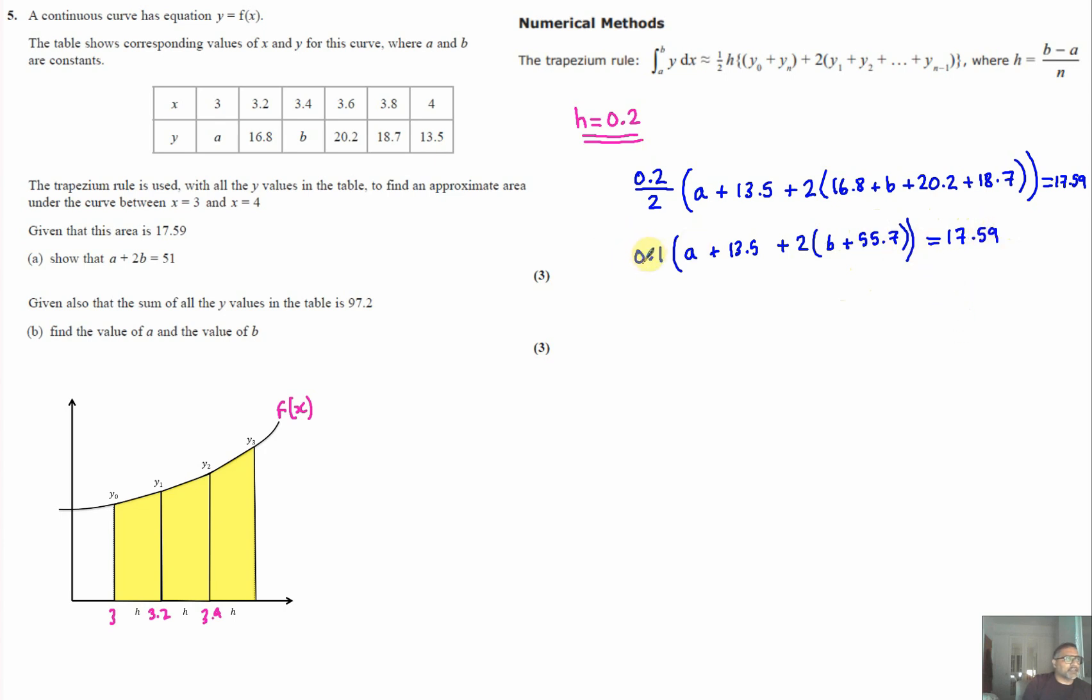Multiplying both sides by 10 eliminates the 0.1. Expanding and simplifying gives a plus 2b plus 111.4 plus 13.5 equals 175.9. Simplifying that down gives a plus 2b plus 124.9 equals 175.9. Subtracting yields a plus 2b equals 51, QED, that which was to be proved.